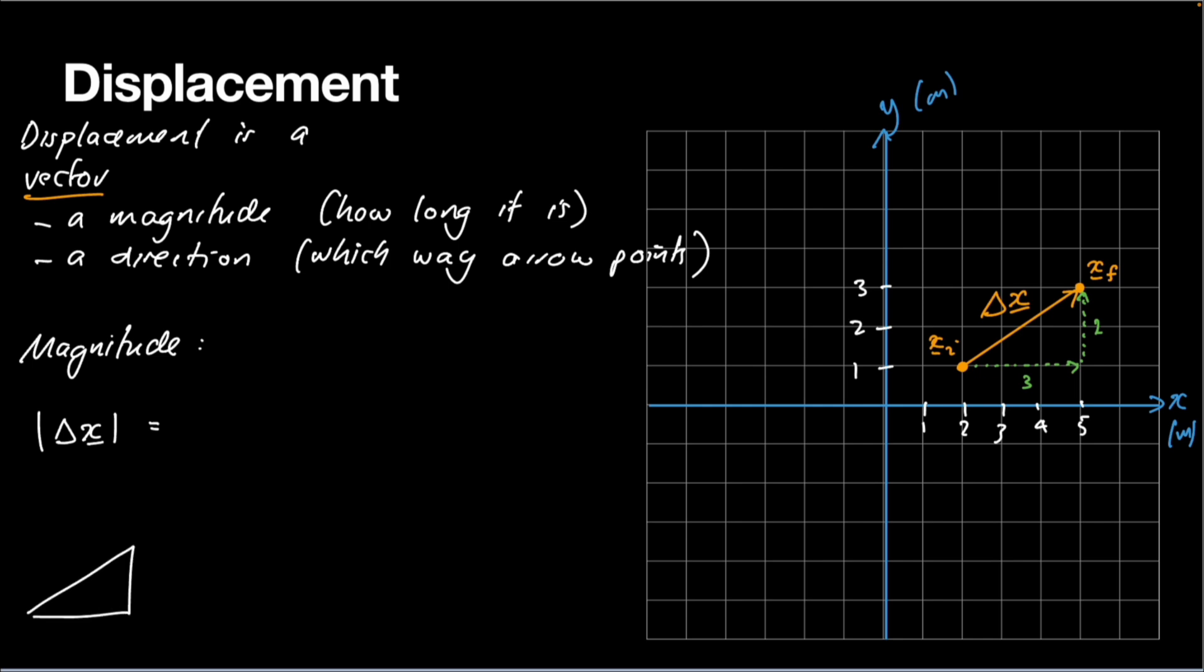So here's our triangle. We'll just call that length of delta x. So Pythagoras' theorem would say that 2 squared plus 3 squared is equal to the length of delta x squared. And so that means that our magnitude is going to be the square root of 2 squared plus 3 squared,